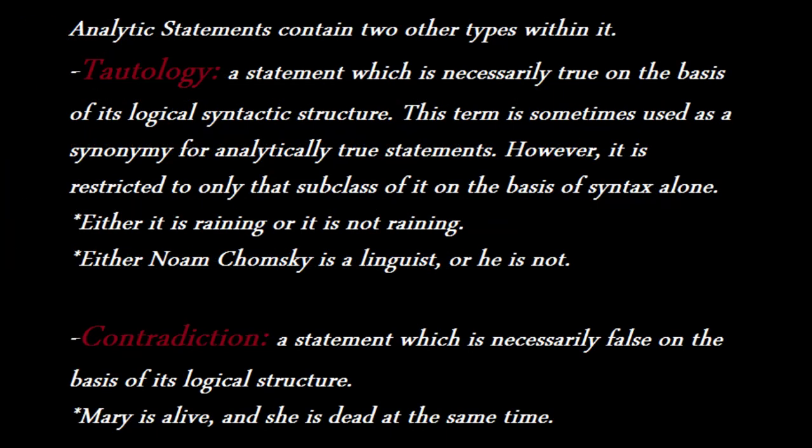Analytic statements contain two other types within them: tautologies and contradictions. A tautology is a statement which is necessarily true by the basis of its logical syntactic structure. This term is sometimes used as a synonym for analytically true judgments or statements. However, it is restricted to only the subclass of these on the basis of syntax alone.